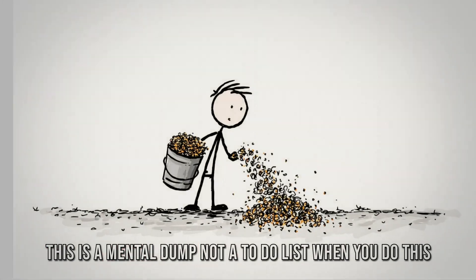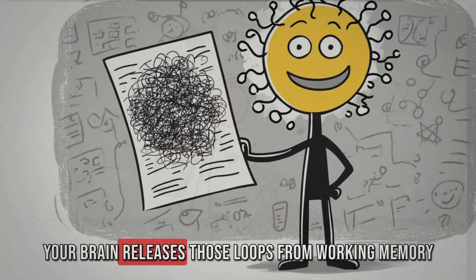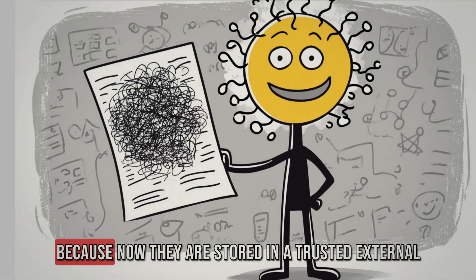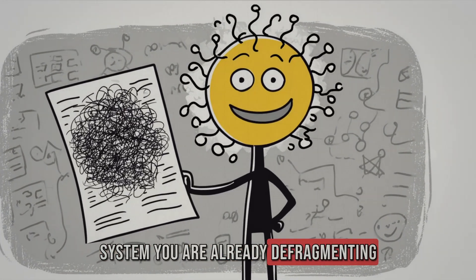This is a mental dump, not a to-do list. When you do this, something powerful happens. Your brain releases those loops from working memory because now they are stored in a trusted external system. You are already defragmenting.